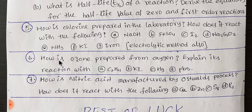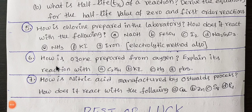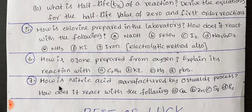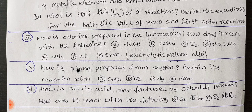Next one is the ozone preparation method. You have three properties: ethylene, potassium, mercury, lead sulfide. This is for 4 marks and 8 marks. Next: how is nitric acid manufactured by Ostwald's process? How does it react with the following: copper, zinc, sulfur, phosphorus?